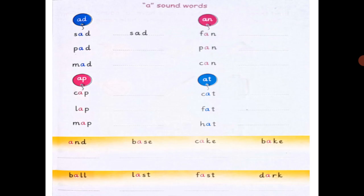And the next page is page number 23, A sound words. Just like that, AD words: sad, pad, mad.